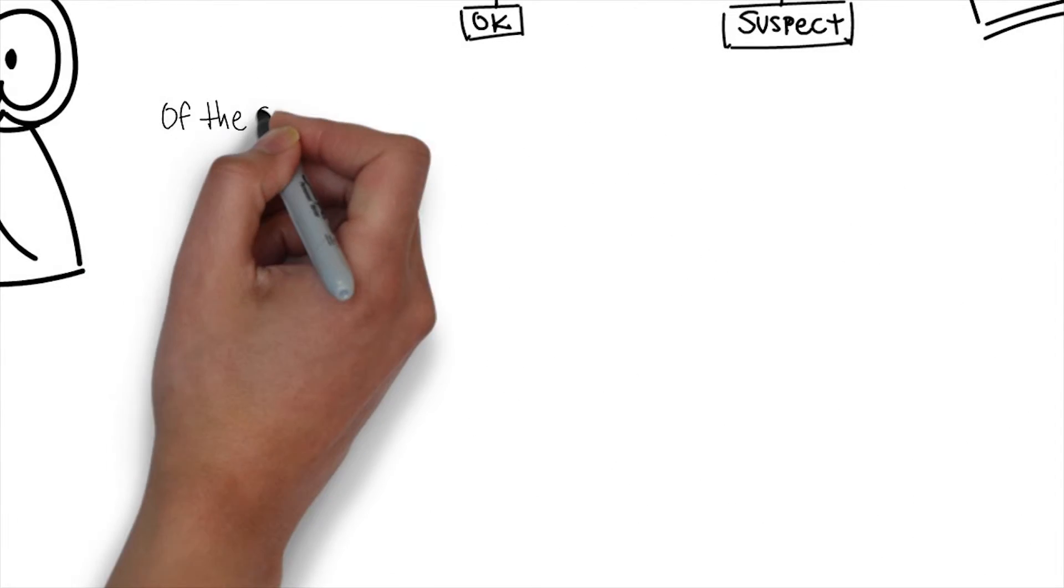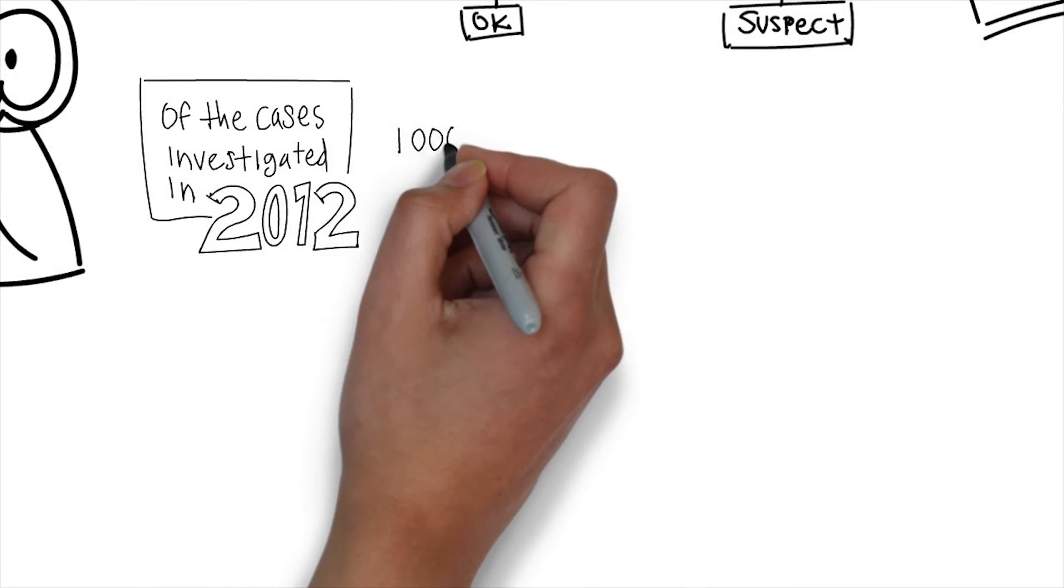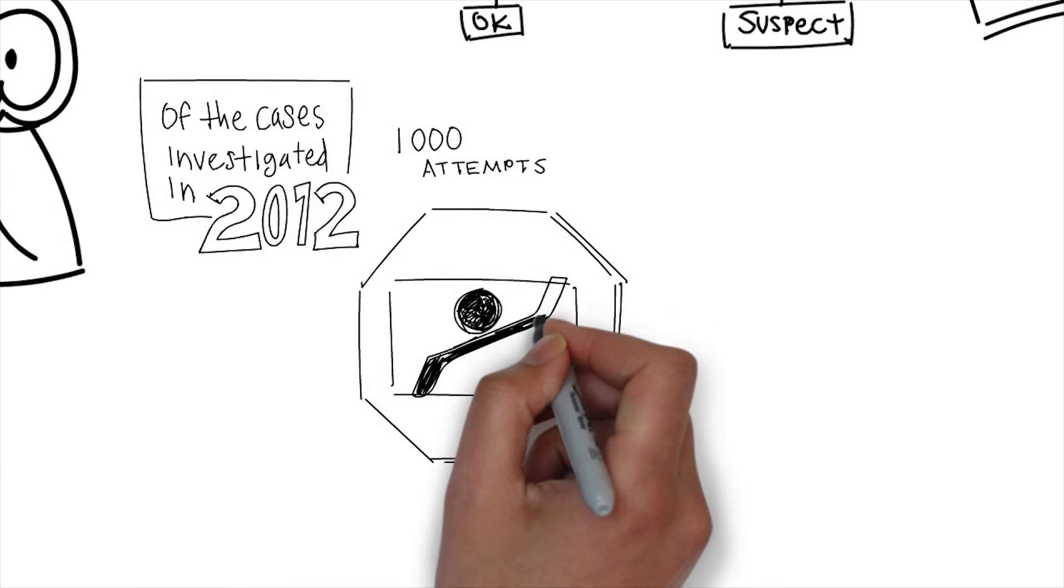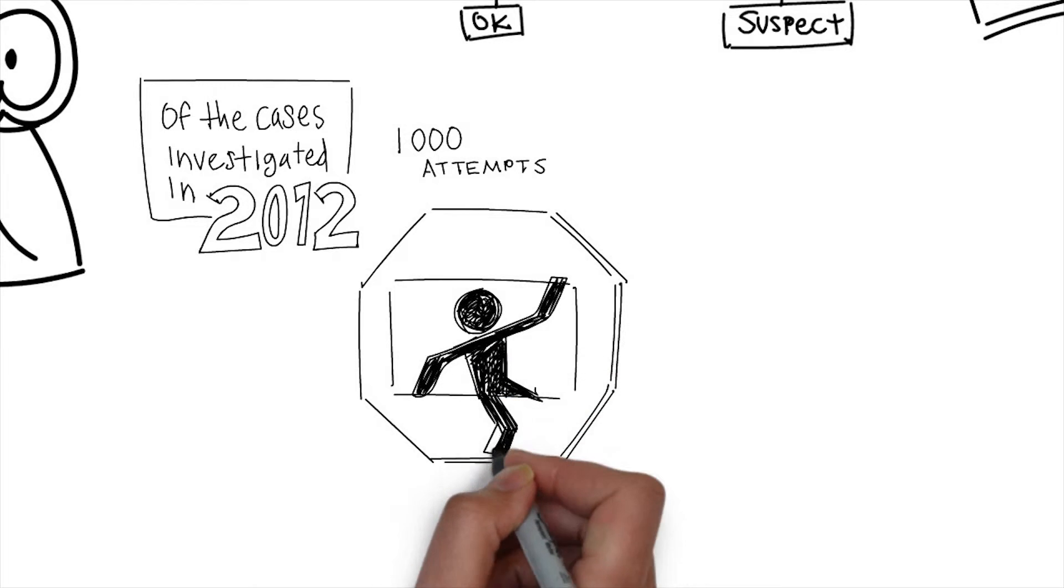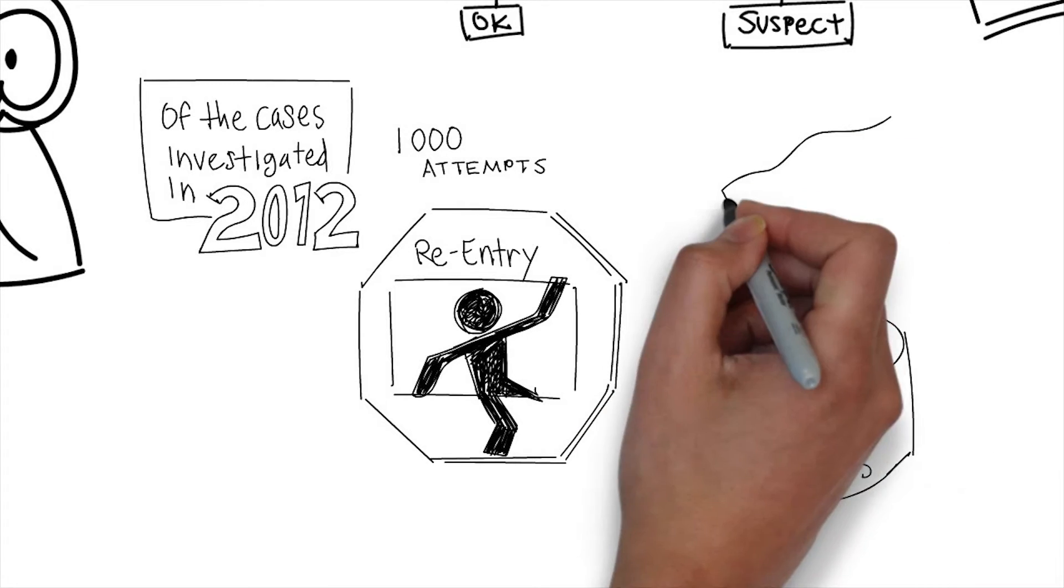I love this quote from Mandiant: of the total cases we investigated in 2012, we saw attackers lodge over 1000 attempts to regain entry to former victims. So they haven't forgot, they're looking for you to reinstall that case, reset that VMware snapshot, or take your system back to a known state such as through a backup process.